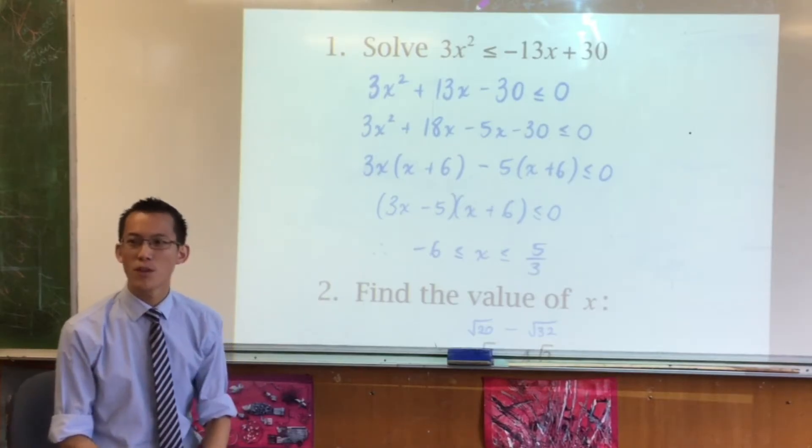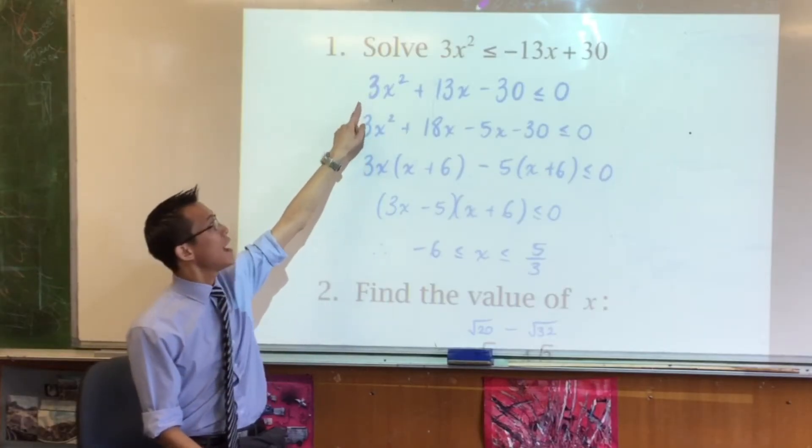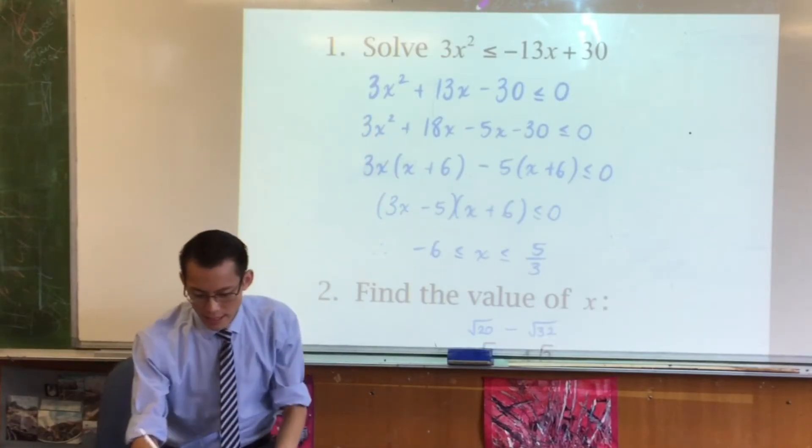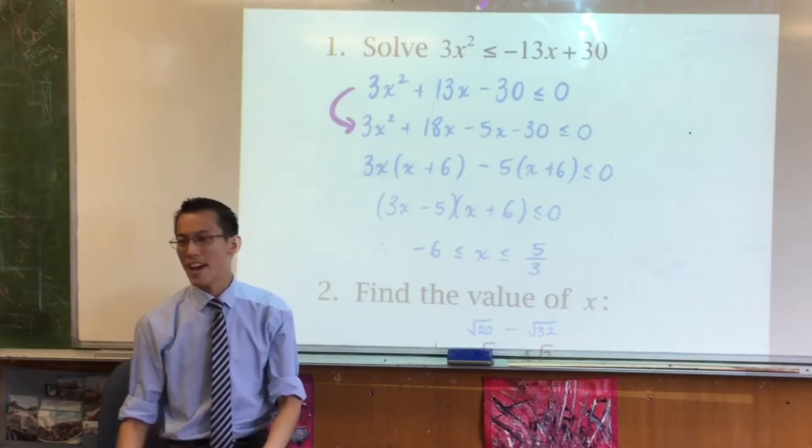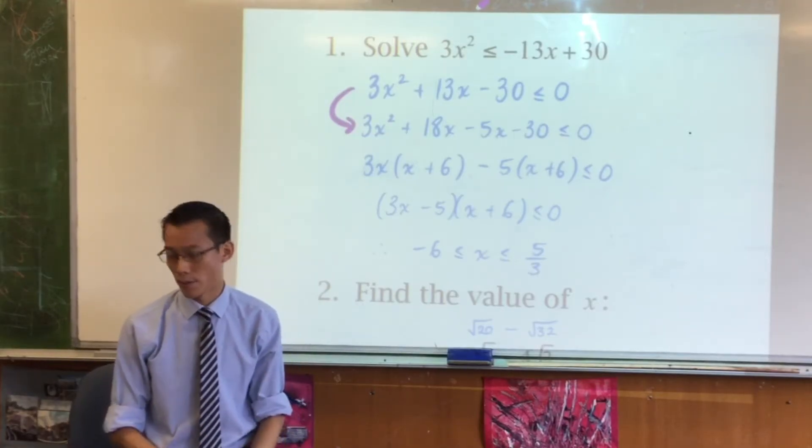Get everything over on the left hand side so you can treat that quadratic just as a quadratic on its own, and then from this line to this line do whatever you need to in order to get this into a factorized form.